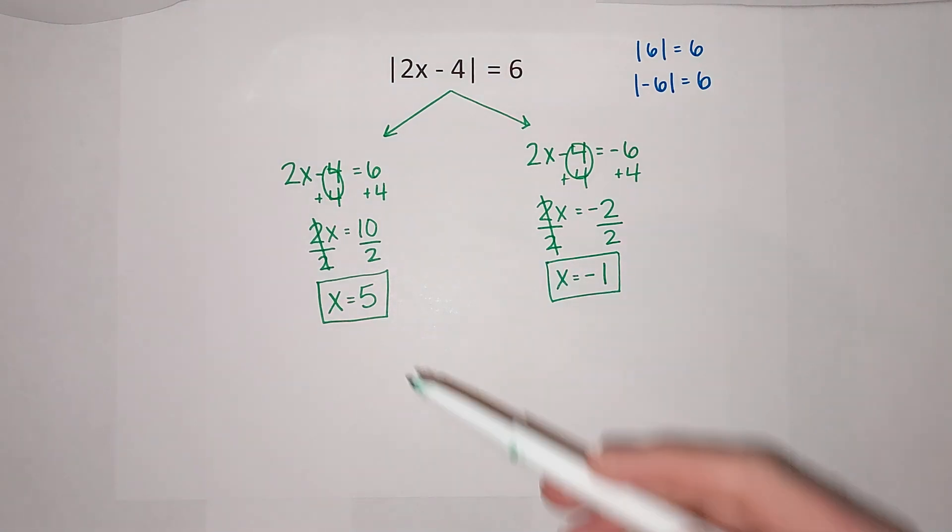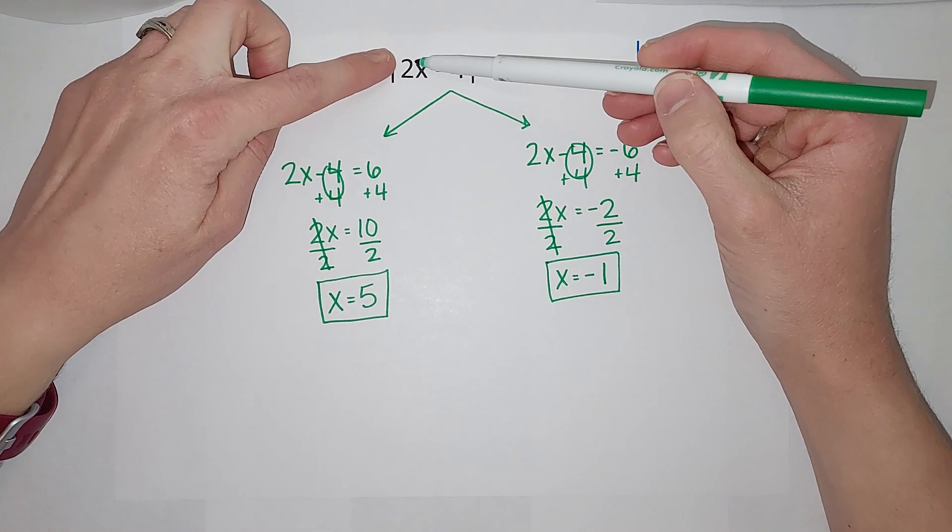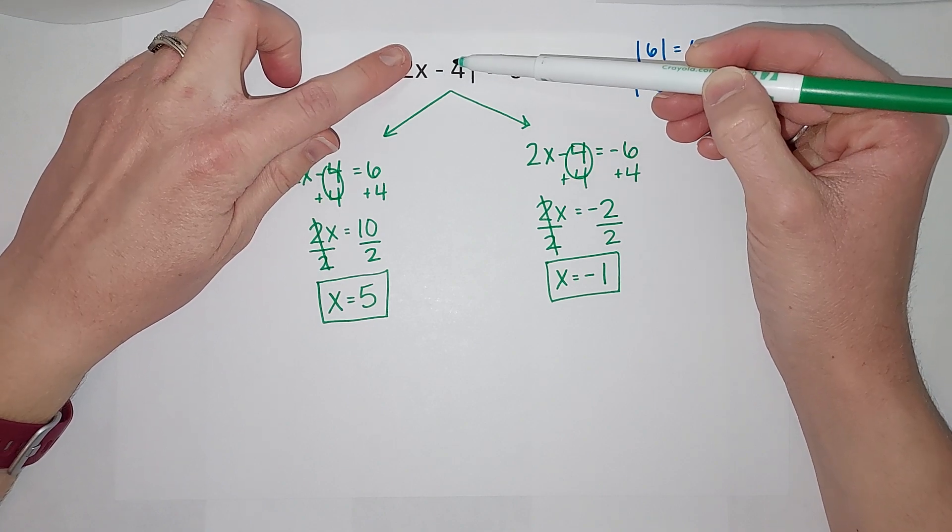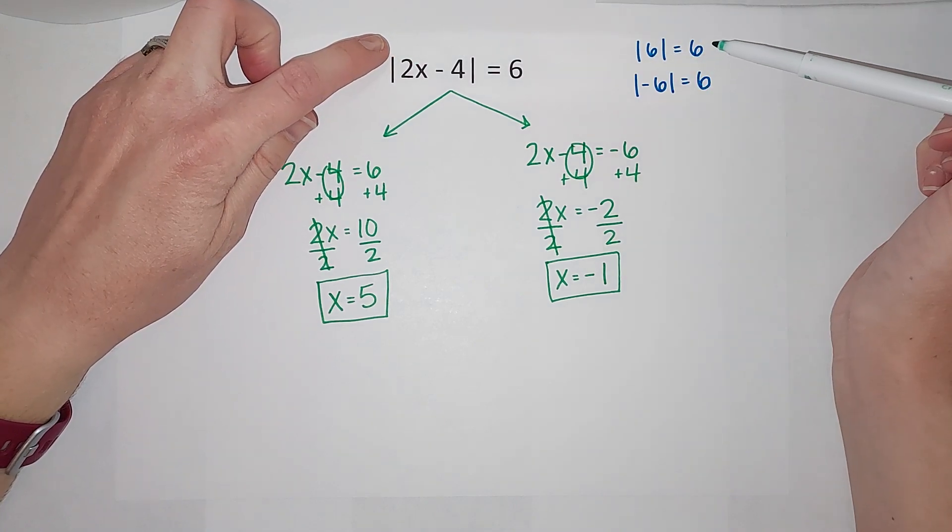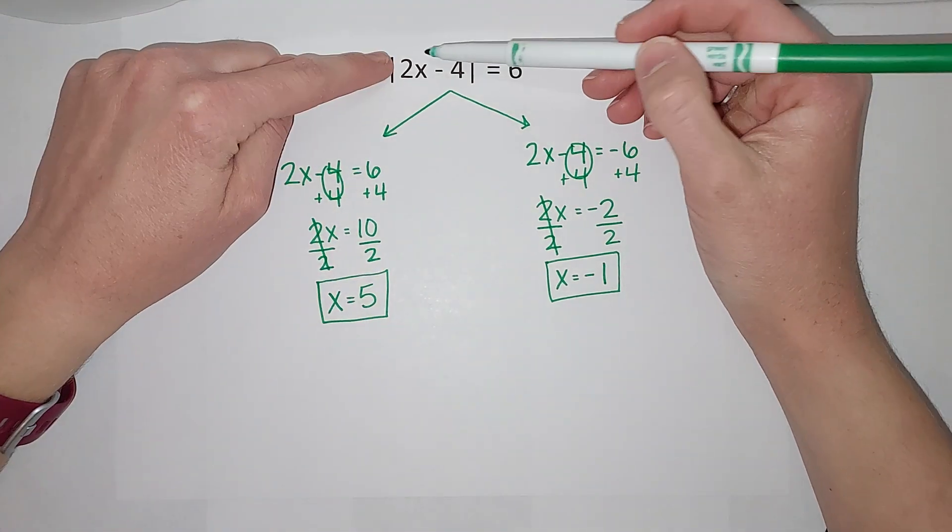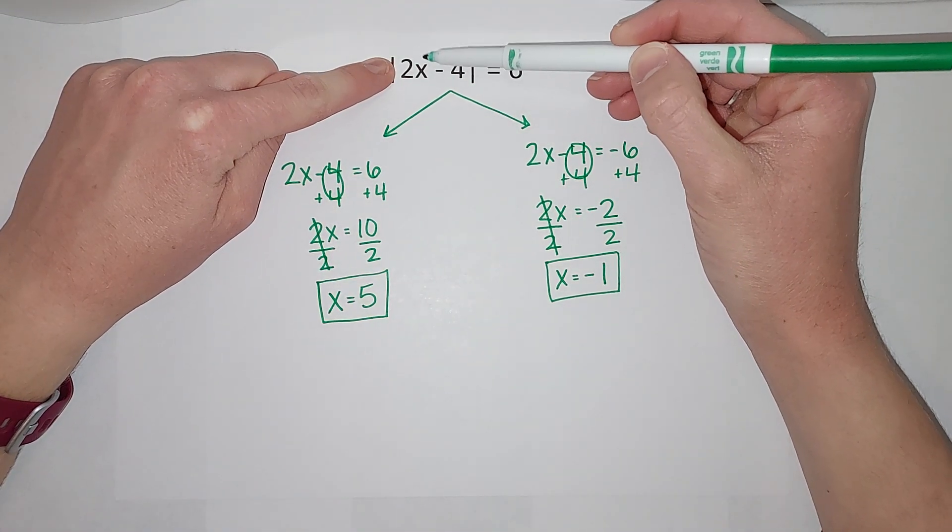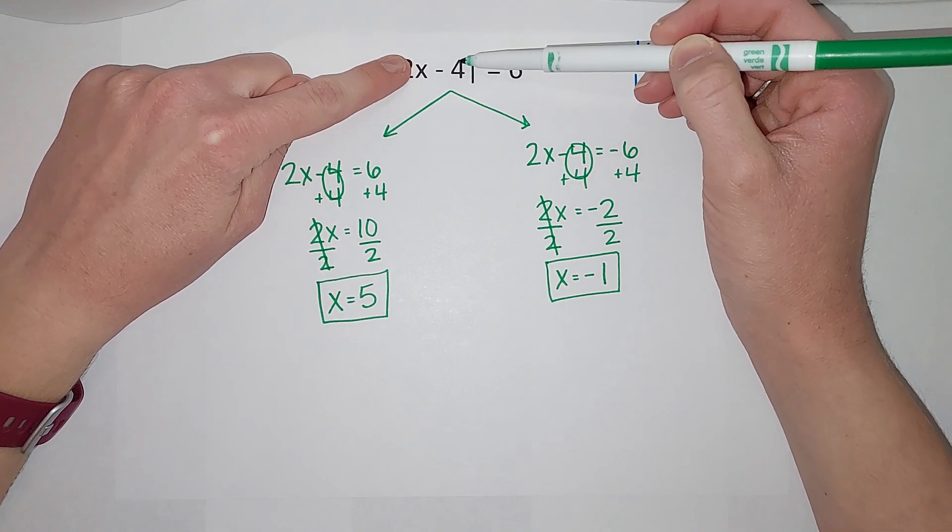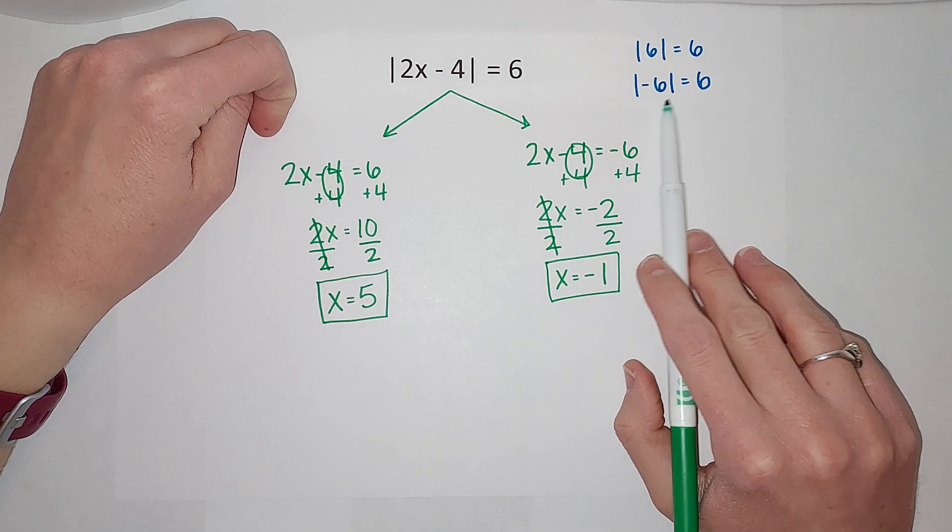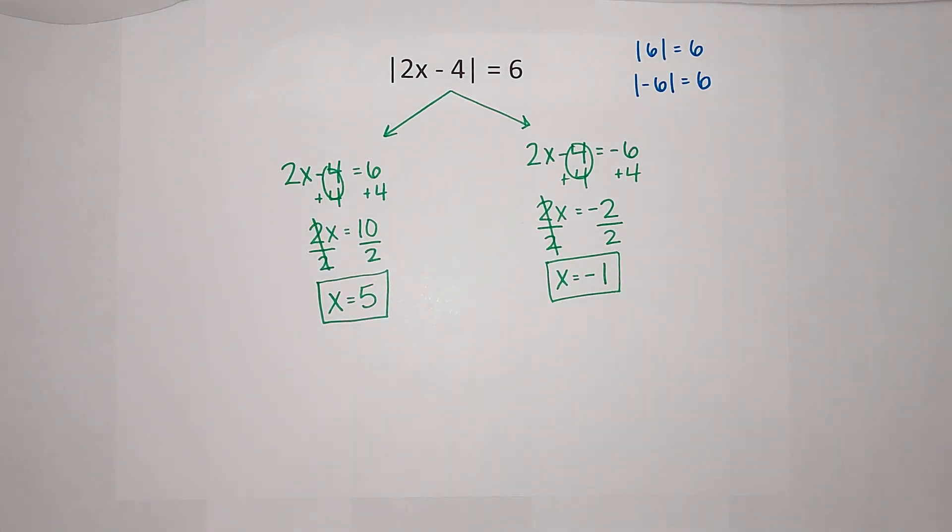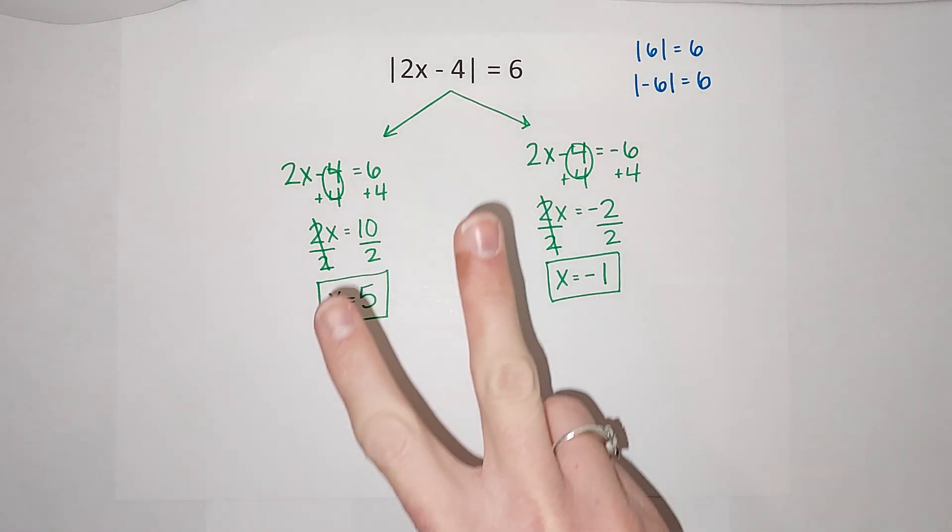Let's just kind of try and quickly plug it in here. Two times five would give me 10, 10 minus four gives me six, the absolute value of six is six. Now if I plug in negative one - two times negative one gives me negative two, negative two minus four gives me negative six, and the absolute value of negative six is six.